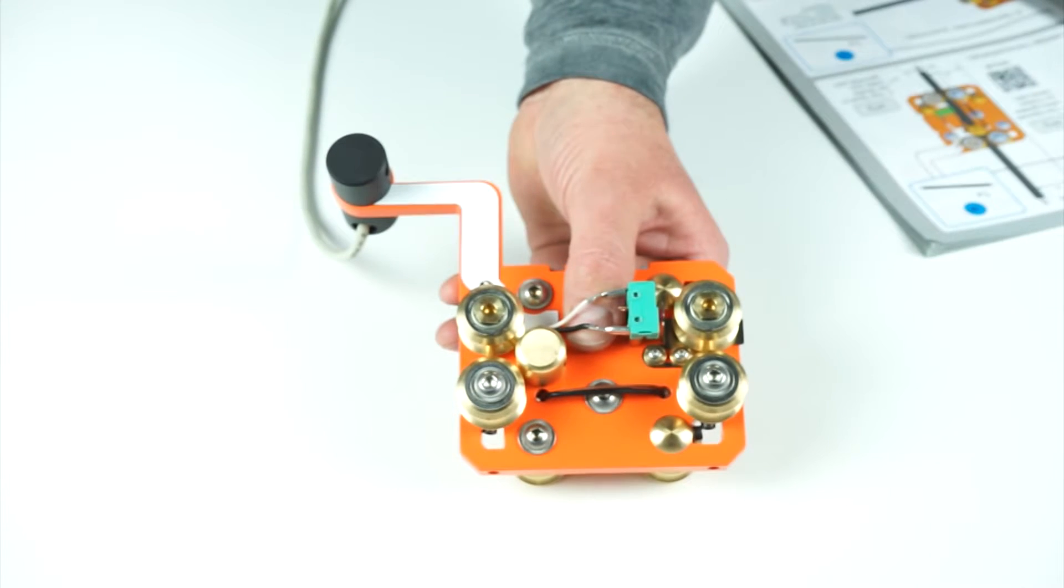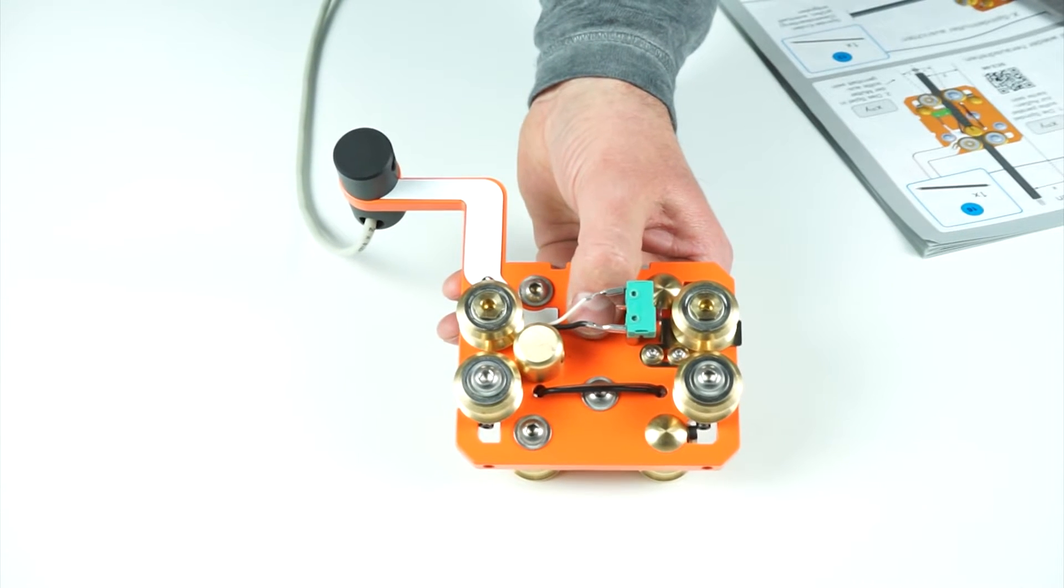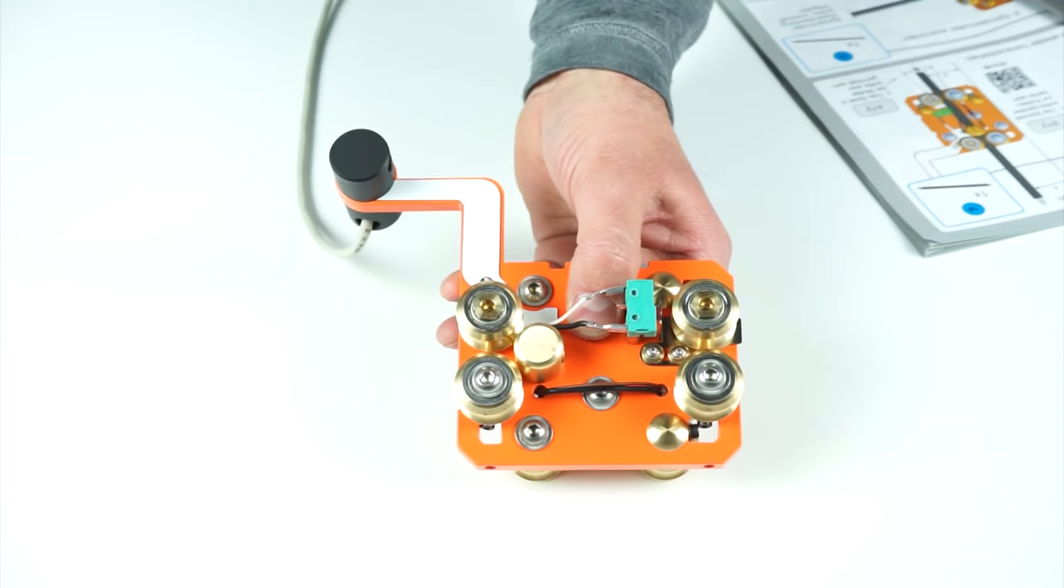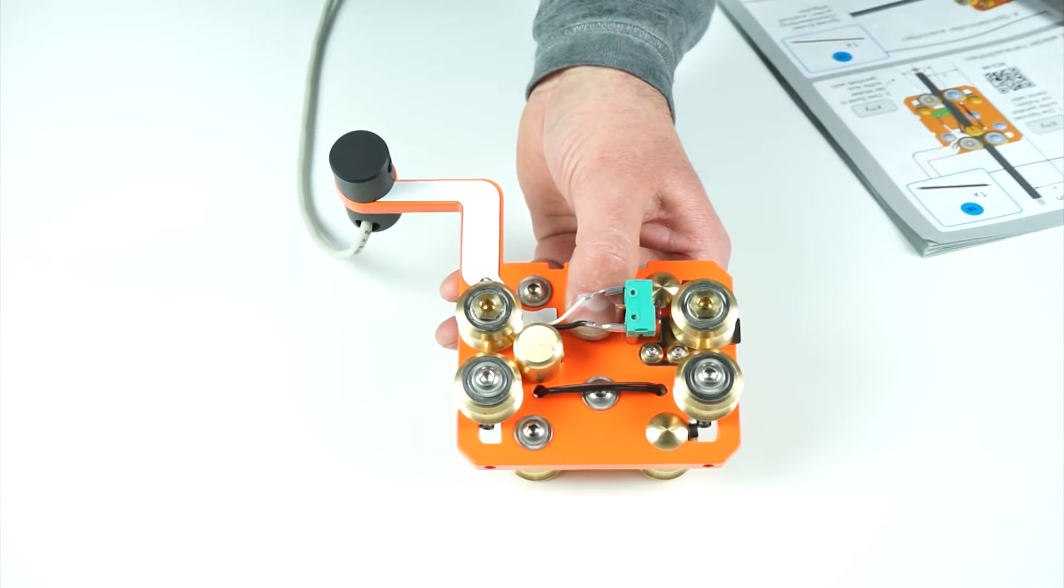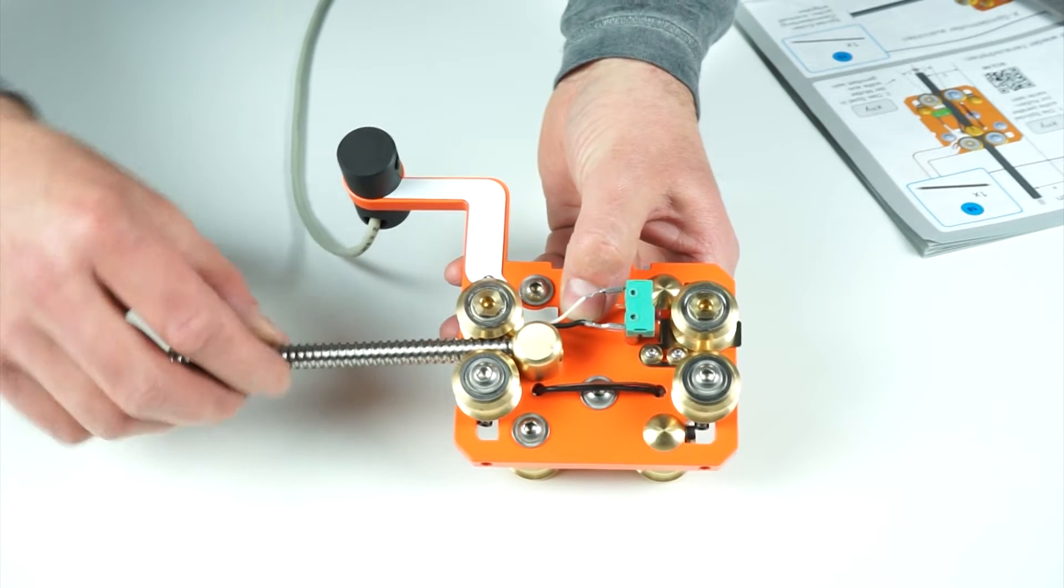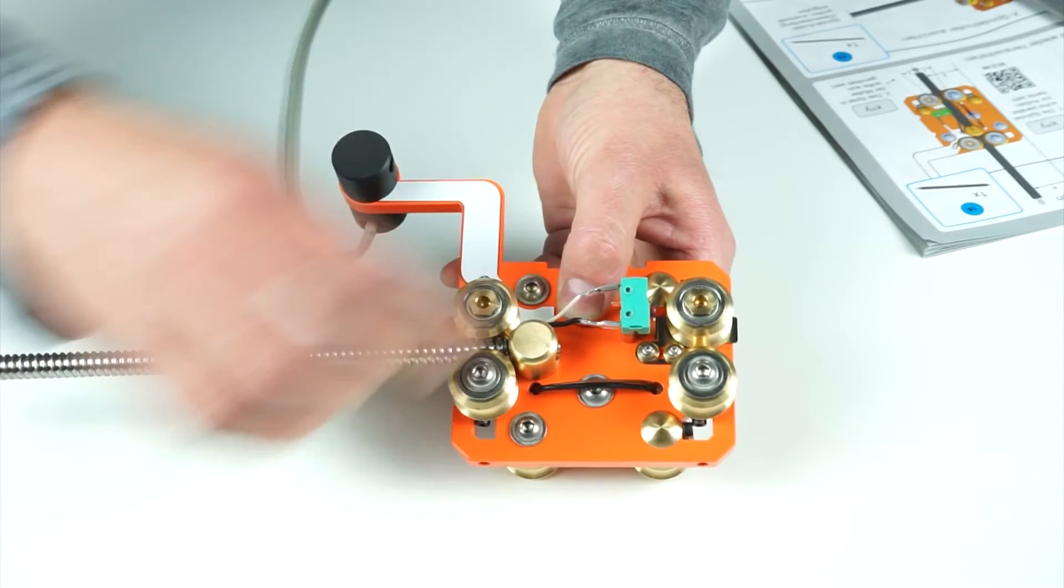Assembly Step 1.13. The alignment of the lead screw nut is very important to ensure smooth operation of the Z axis. Thread the lead screw into the lead screw nut.